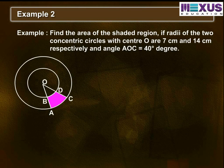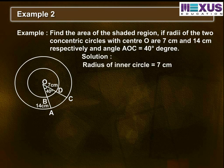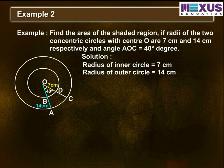Example 2: Find the area of the shaded region if the radii of the two concentric circles with center O are 7 cm and 14 cm respectively, and angle AOC is equal to 40 degrees. First, we have to find the area of two sectors, that is OBD and OAC, then find their difference to get the area of the shaded portion. Given: the radius of the inner circle equals 7 cm, the radius of the outer circle equals 14 cm, and angle AOC is equal to 40 degrees.